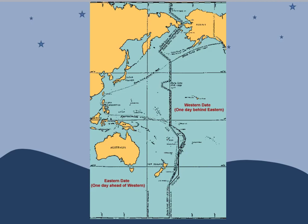It may throw you off when drawing a compass — thinking east is on this side. But remember, we're in the western hemisphere, and this is the eastern hemisphere. That's why the date line falls where it does.